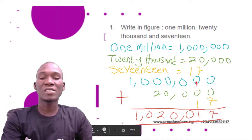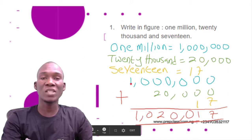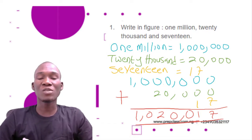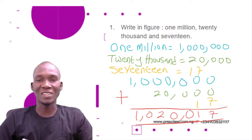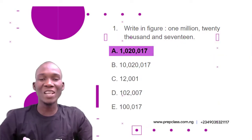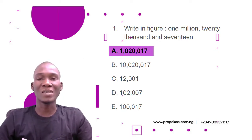Now we add starting from the rightmost column: 0+0+7 gives 7; 0+0+1 gives 1; 0+0 gives 0; 0+2 gives 2; then 0 with nothing to add gives 0; and 1 with nothing to add just drops down. That gives us 1,020,017 — which is one million twenty thousand and seventeen. Looking at the options, the correct answer is option A: 1,020,017.